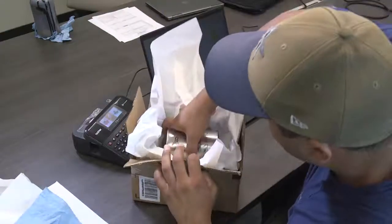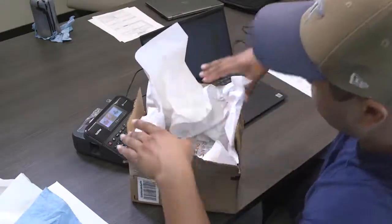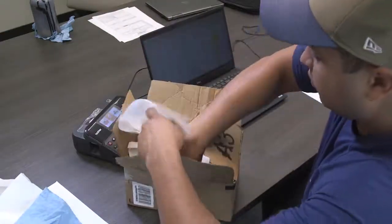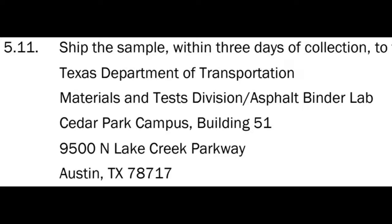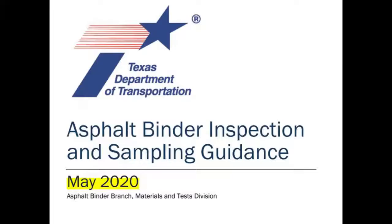Pack the sample in a box using crumpled paper and make sure the FedEx tracking number is identified in Site Manager. If the sample is designated for Materials and Test Division, ship the sample within three days of collection to the Cedar Park campus.